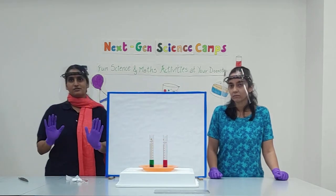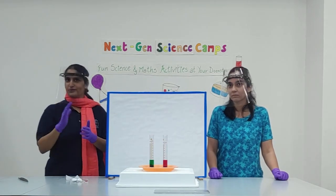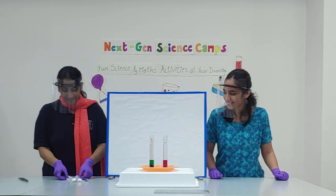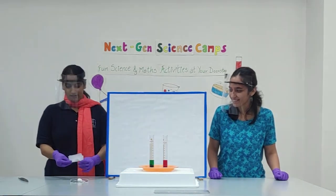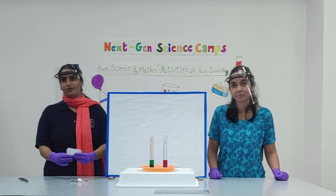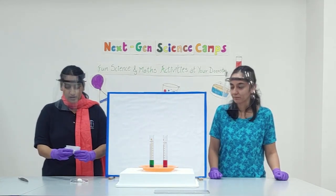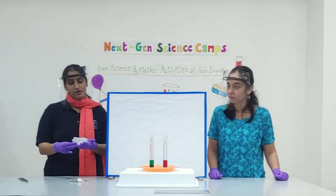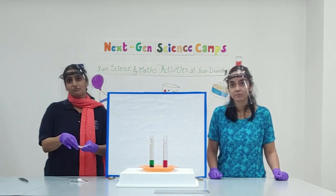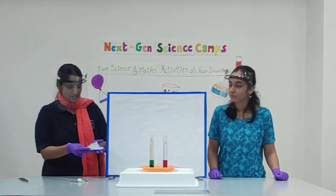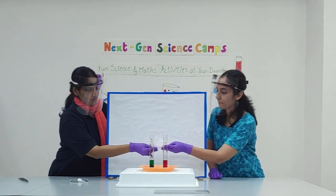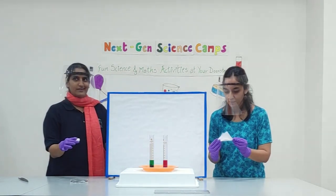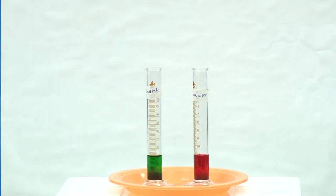You know that vinegar and baking soda together mix — you can write that down in the comment box. You might have made this volcano very often as a school kid. In one case, we are going to add baking soda in the powdered form, and in the other case, we are going to add baking soda in the chunk form. So let's see what happens. Here you go — I am going to add that chunk. Let's see which one reacts first and faster.